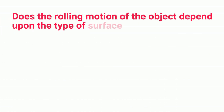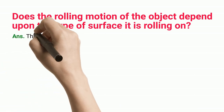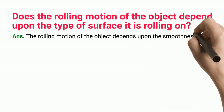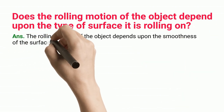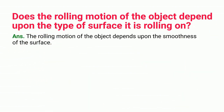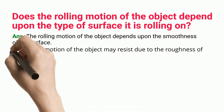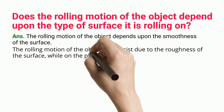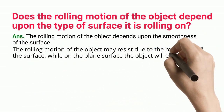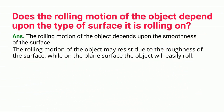Does the rolling motion of the object depend upon the type of surface it is rolling on? The rolling motion of the object depends upon the smoothness of the surface. Rolling motion may be resisted due to the roughness of the surface, while on a plane surface the object will easily roll.